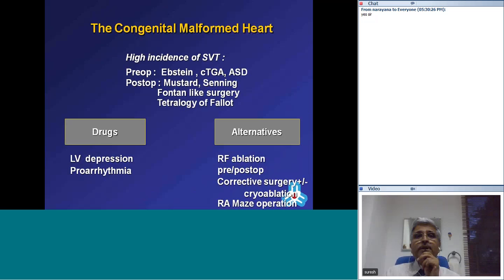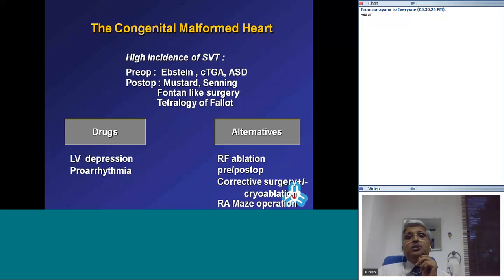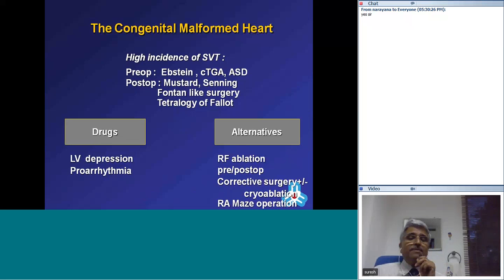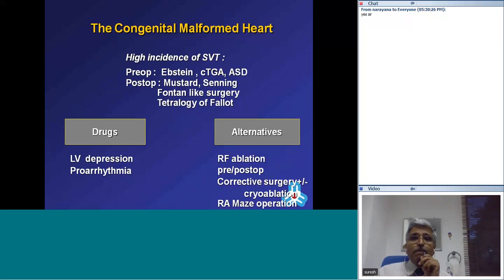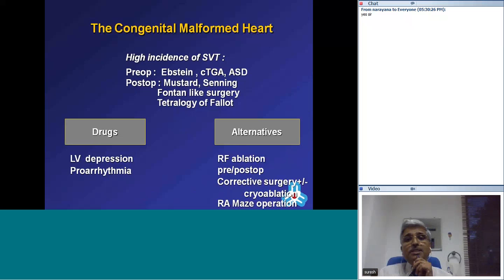Certain congenital cardiac malformations have a greater association with arrhythmia — the association between Ebstein anomaly and supraventricular tachycardia is legendary. In corrected transposition or atrial septal defect there is greater arrhythmia association. Post-operative conditions such as Mustard and Senning surgeries, with extensive atrial suture lines, form substrate for intra-atrial reentrant tachycardia. Fontan-like surgery also gives rise to atrial tachycardia. Tetralogy repair can produce atrial flutter or ventricular tachycardia. Treatment alternatives include RF ablation, cryoablation combined with corrective surgery, and procedures like the MAZE operation for atrial fibrillation.